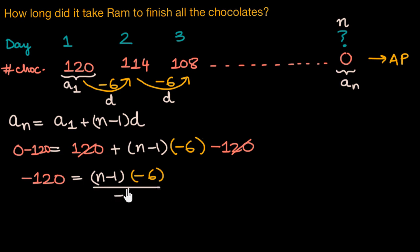So as we need n, let's divide both sides of this equation by negative six. So negative six times 20 is negative 120. So on the left hand side, I have 20 and on the right hand side, I have n minus one. So on adding one on both sides of this equation, we'll get n equals to 21.